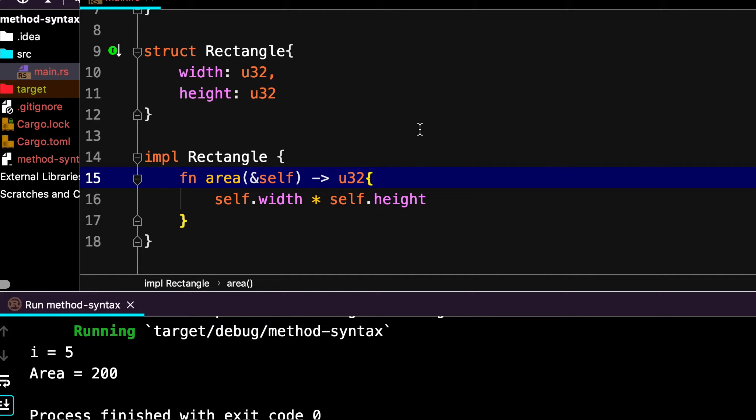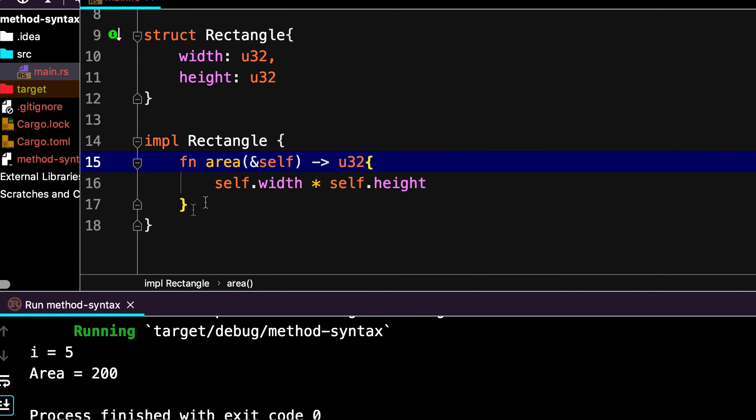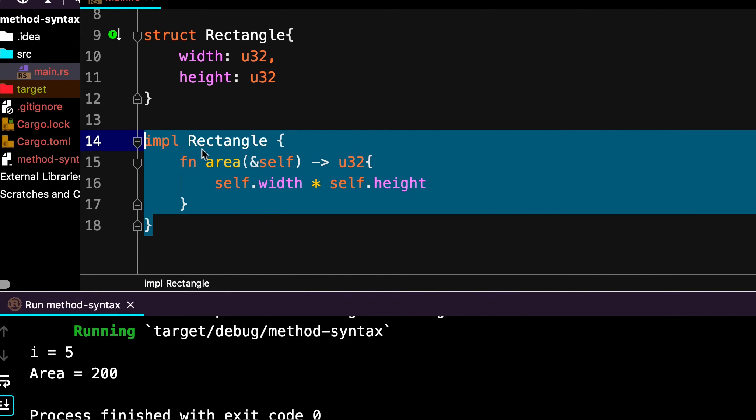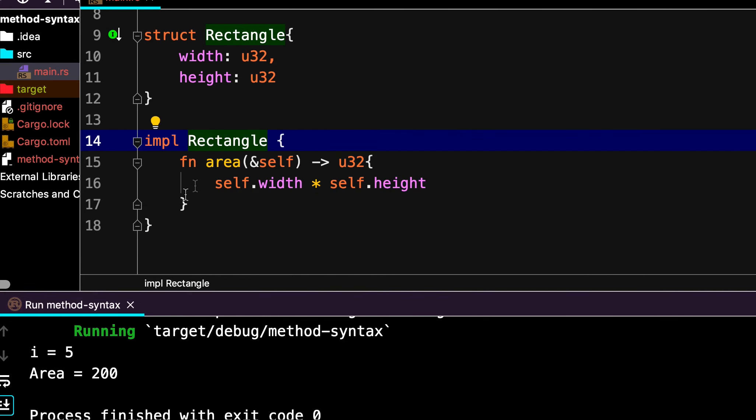So that's how we call method syntax in Rust. And one thing to note is that we can add multiple impl blocks for the same rect, that we will see later. It's not mandatory to keep all the functions inside one impl block only. See you in the next video.